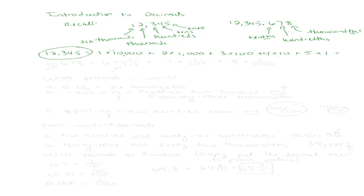So if we have a decimal like 0.678, the same thing is true, except the six is in the tenths place value, and tenths really means one over ten. We can add seven times one over a hundred, plus eight times one over a thousand, and so on. Instead of multiplying by large place values, now the place value is one over that place value.